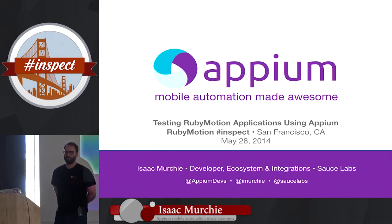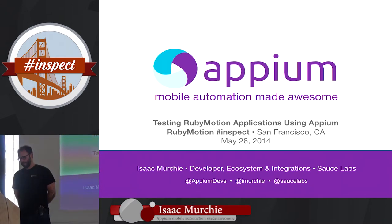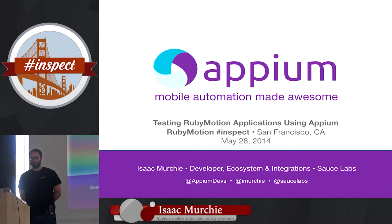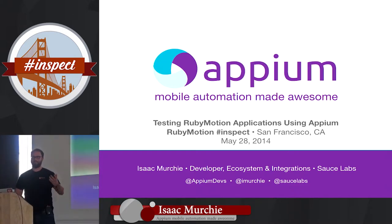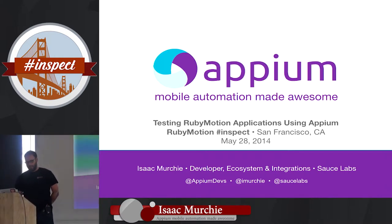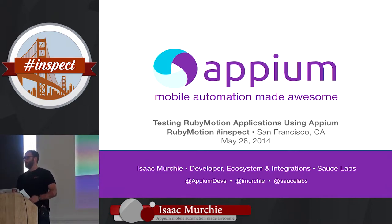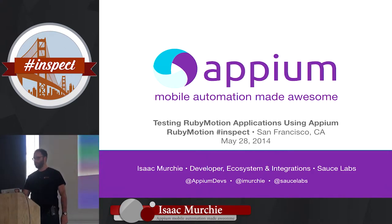My name is Isaac Murchie. I'm a core developer and ecosystem and integration developer at Sauce Labs, which is a company that does test infrastructure for Selenium tests. We have an open source project called Appium, which I'm going to talk about today because it kind of opens up functional testing for mobile apps.